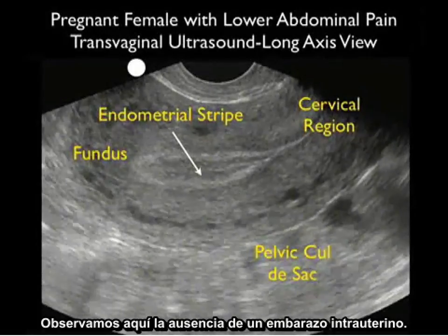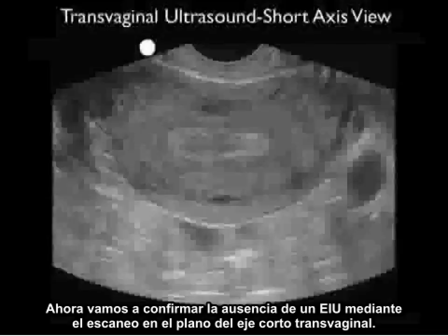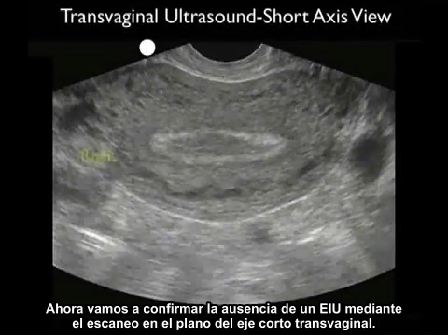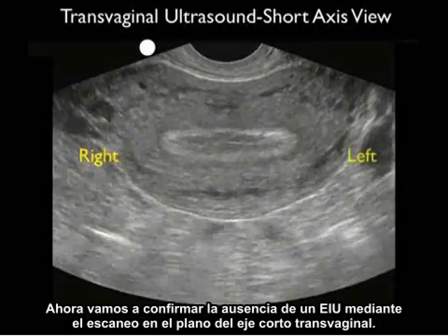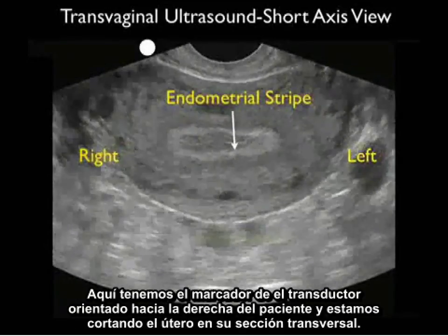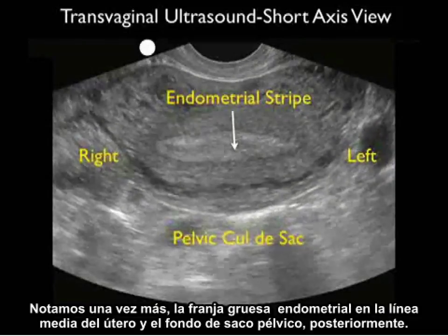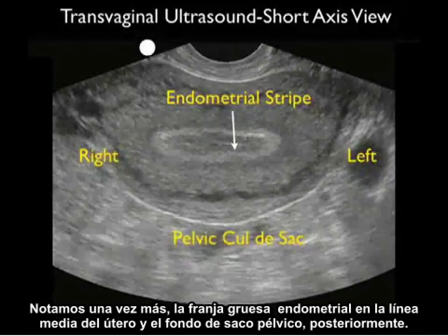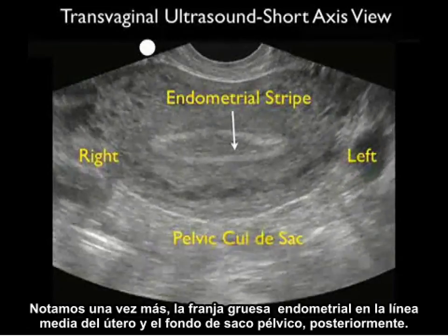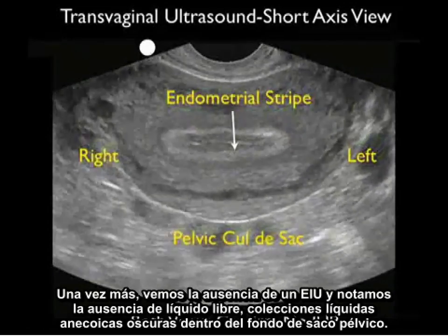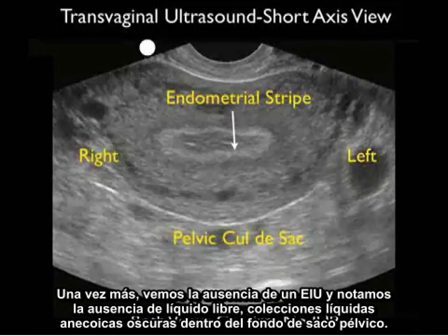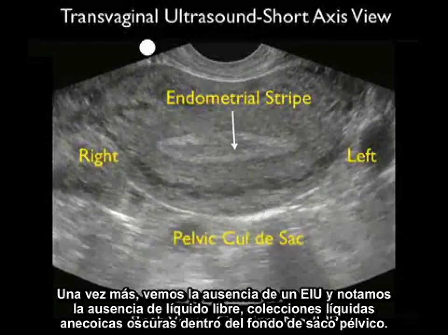Notice the absence of an intrauterine pregnancy. Now we'll confirm the absence of an IUP by scanning in the transvaginal short axis plane. Here we have the probe marker oriented towards the patient's right, cutting the uterus in cross section. Notice again the thickened endometrial stripe in the midline and the pelvic cul-de-sac posteriorly. Again we see the absence of an IUP and also note the absence of free fluid — dark anechoic fluid collections within the pelvic cul-de-sac.